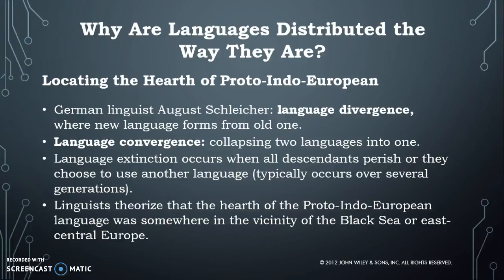As divergence and convergence occur, languages are born and die. Language extinction happens when all the descendants of a language's speakers perish or choose to use another language, and this typically occurs over several generations. For example, immigrants to the U.S. speak their home language plus learn English; their kids often speak English better but still speak both; by the third generation, those kids often don't learn the original language because their parents are more comfortable speaking English — and that's what we mean when we say it occurs across several generations.